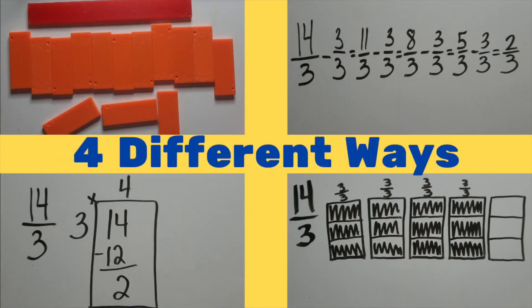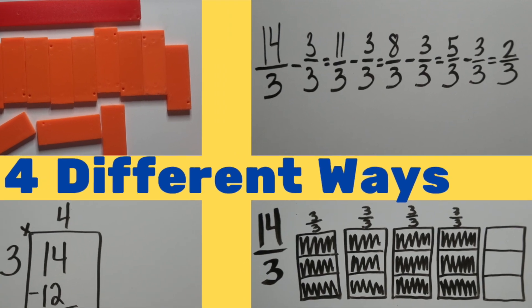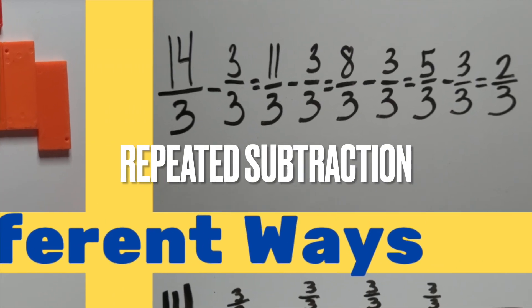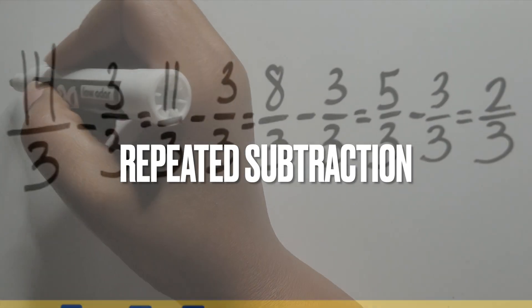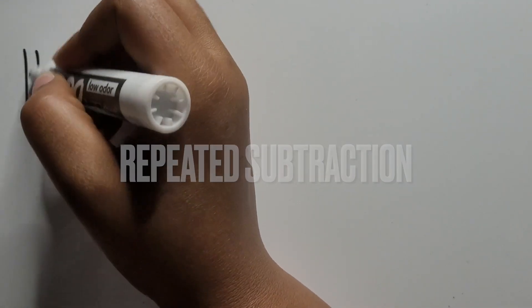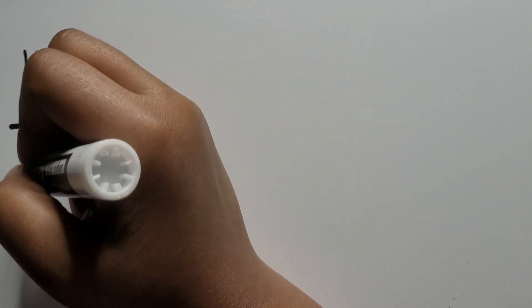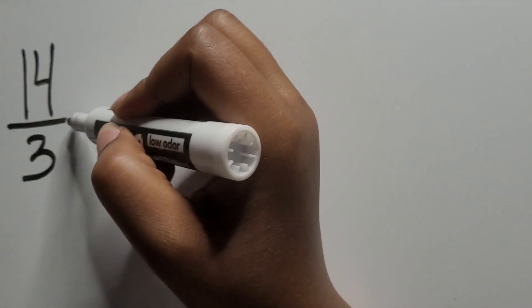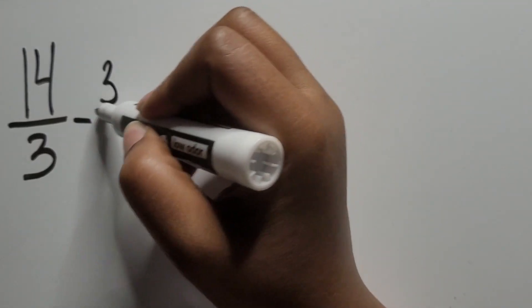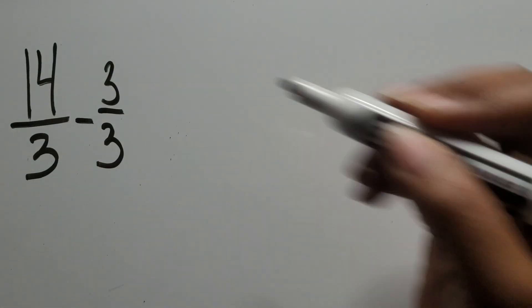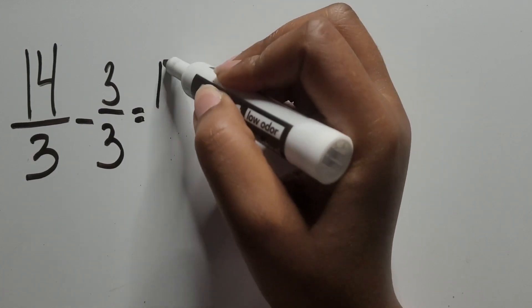A third way moves away from pictures and focuses on using repeated subtraction as a way to convert a fraction greater than one to a mixed number. Again, we're using the example of 14 thirds to highlight these strategies. With repeated subtraction, we want to subtract out a whole or the amount of thirds that equals to one whole and that is three thirds.